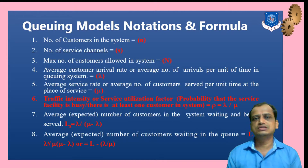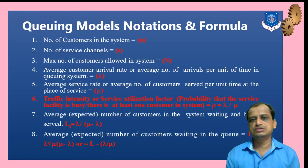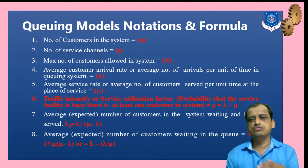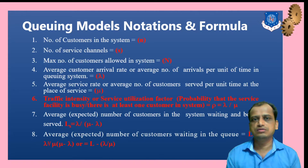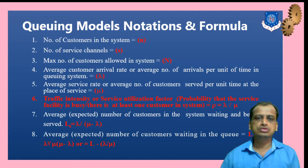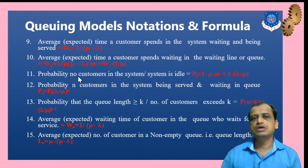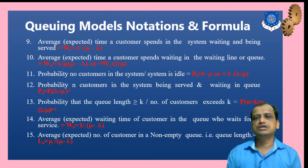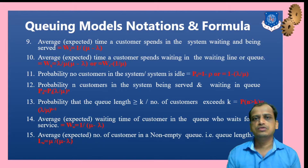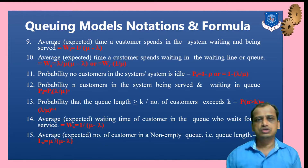Some formulas are given for the single server model, starting with traffic intensity, number of customers, number of service channels, and the maximum number of customers allowed in the system. There are around 15 formulas here — remember each and every one of them to solve examples based on the single server model.